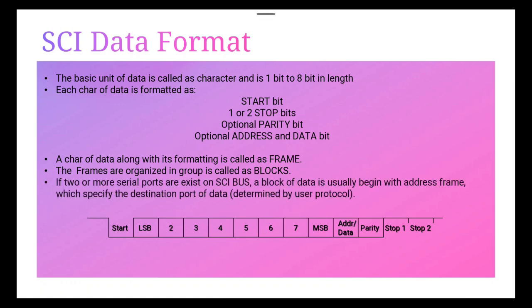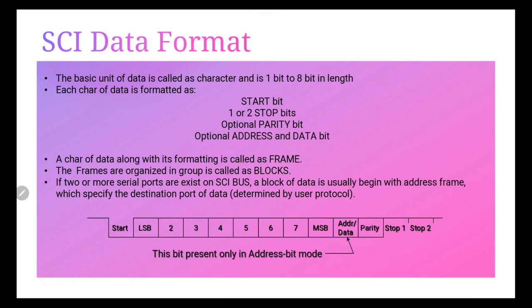If two or more serial ports exist on the SCI bus, a block of data usually begins with an address frame which specifies the destination port of the data. So the block of data will begin with an address frame, where the address bit will be 1. This address bit is present only in address bit mode, which will be discussed in upcoming slides.